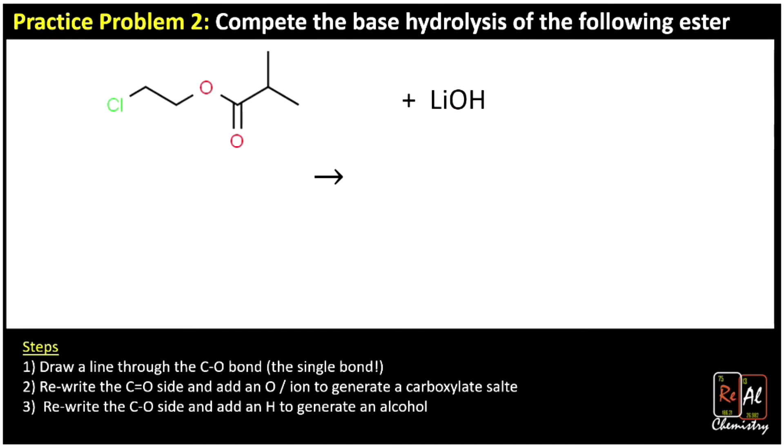One more example. Here we have some substituents. And also our ester has been flipped upside down. But same basic process. We're going to split right here. And first, I'm going to redraw the side with the C double-O bond, as we say in step two.